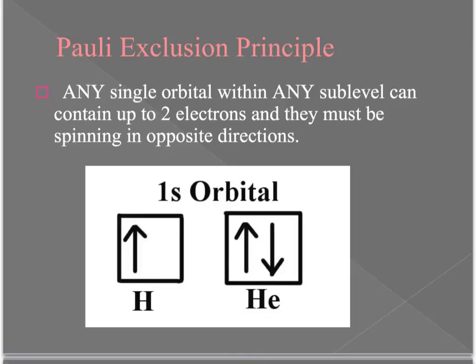For example, hydrogen has one electron so the 1s orbital would have one electron in it. It doesn't matter which direction you designate that electron is moving because it's only a single electron. Usually the convention is to represent the electron spin up first. In helium, the 1s orbital has two electrons — one moving one direction and one moving the other direction.